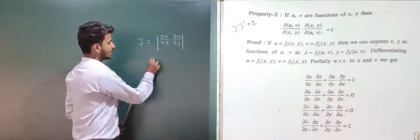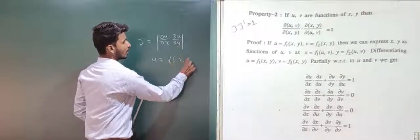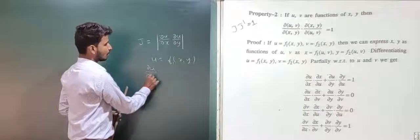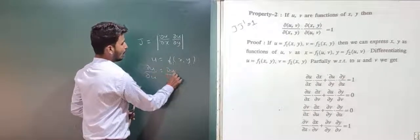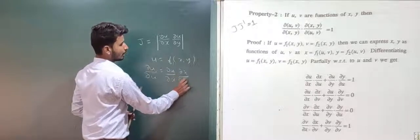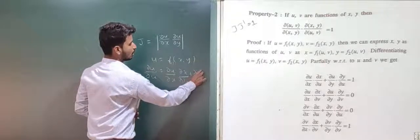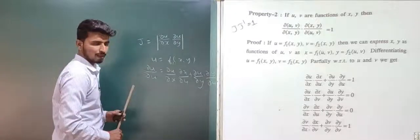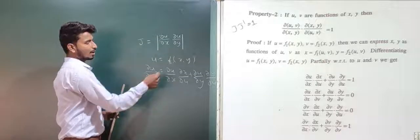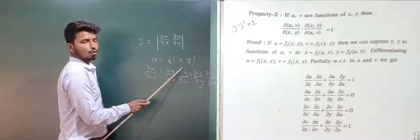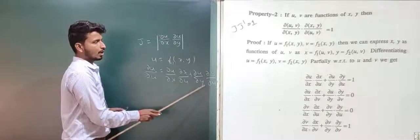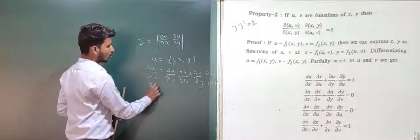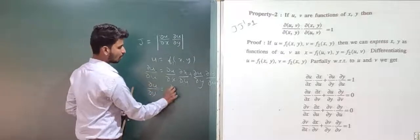Differentiating u = f₁(x,y) partially with respect to u, we get ∂u/∂u = ∂u/∂x · ∂x/∂u + ∂u/∂y · ∂y/∂u. Since ∂u/∂u = 1, this gives ∂u/∂x · ∂x/∂u + ∂u/∂y · ∂y/∂u = 1. Next, differentiating with respect to v gives ∂u/∂v = ∂u/∂x · ∂x/∂v + ∂u/∂y · ∂y/∂v.